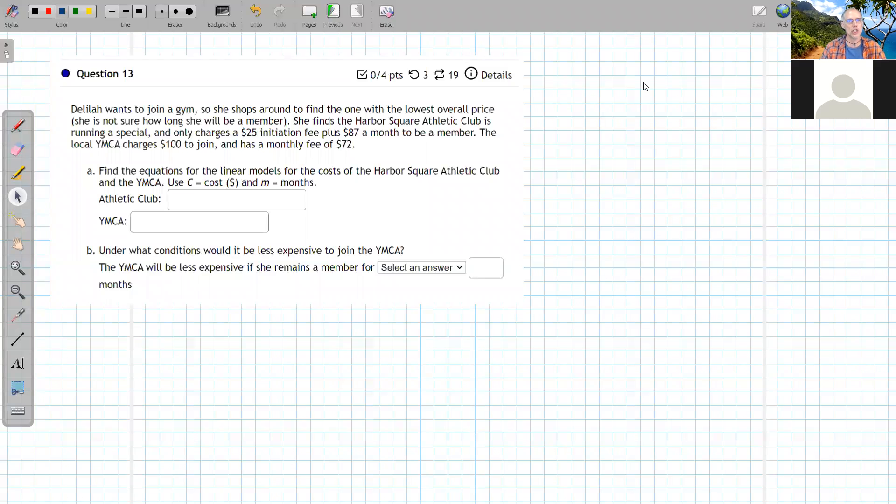Delilah wants to join a gym. She shops around to find one with the lowest overall price, but she's not sure how long she'll be a member. Harbor Square Athletic Club charges $25 initiation fee plus $87 per month. The YMCA charges $100 to join and then $72 per month. So Harbor Square is low to start but more per month.